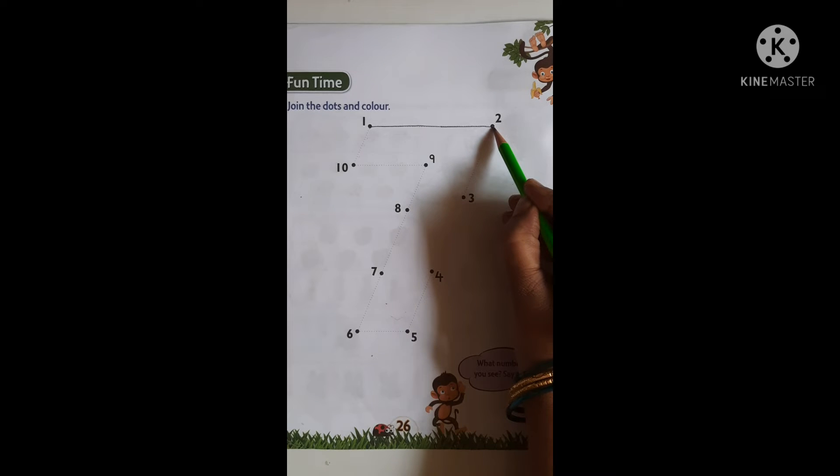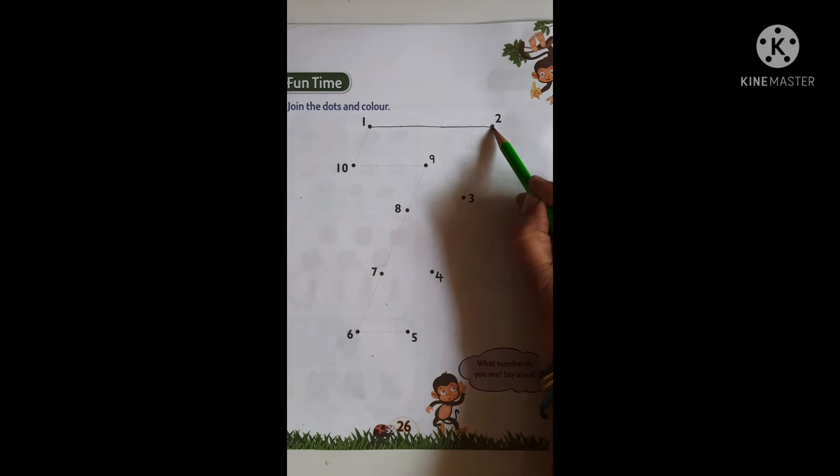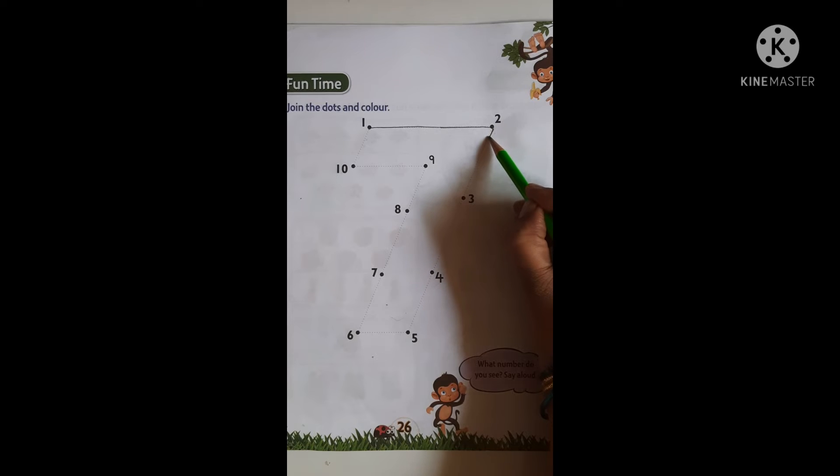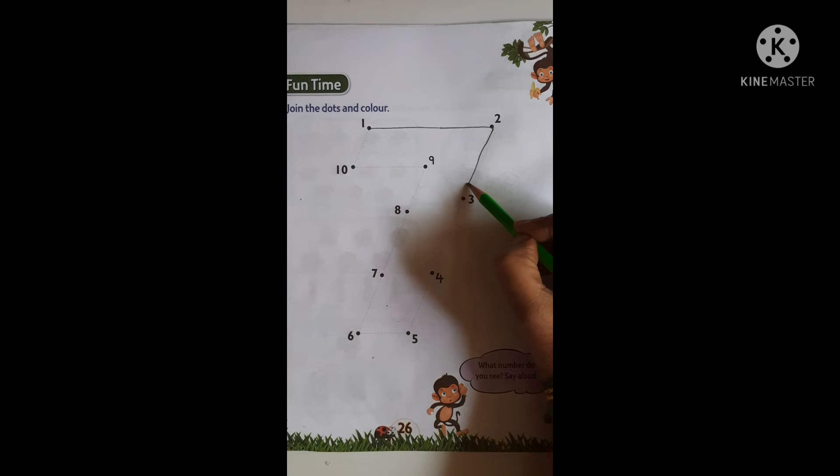After 2, 3. Yes, this is number three. Drag your pencil downwards from two to three.